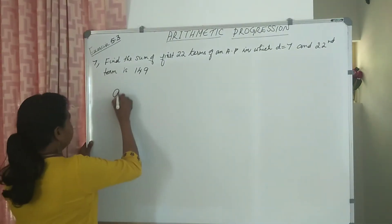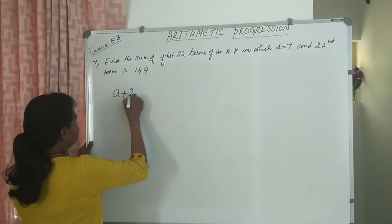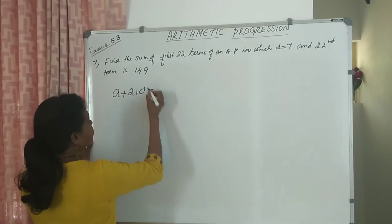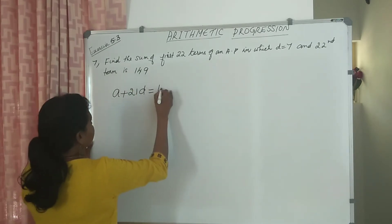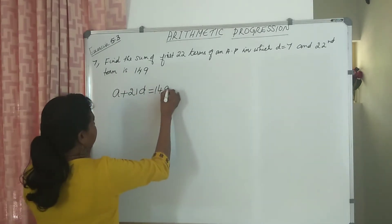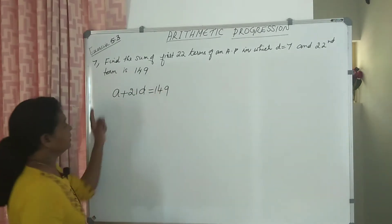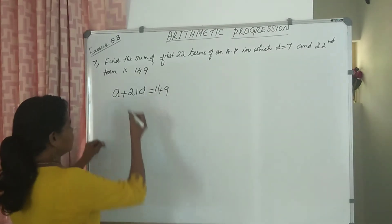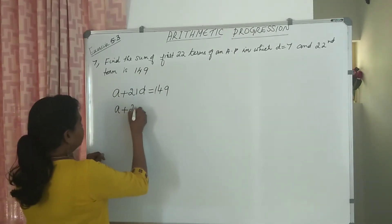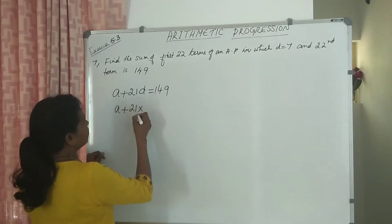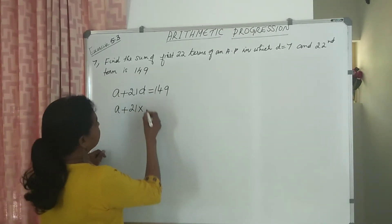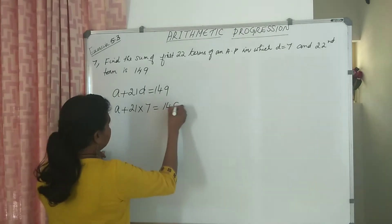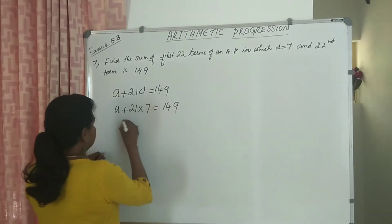You can write A plus 21D equal to 149. Right? And D here is 7. So substitute the value of D, we get 21 into D. D is 7, equal to 149.